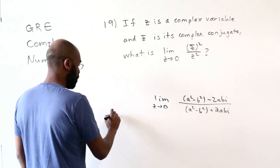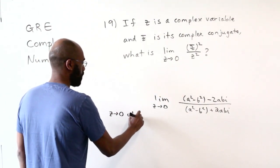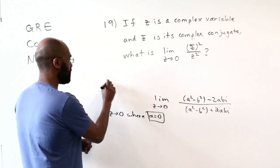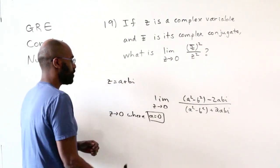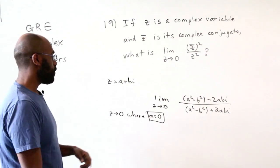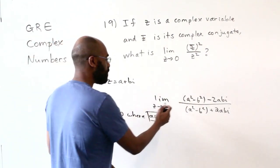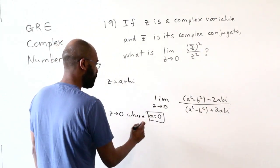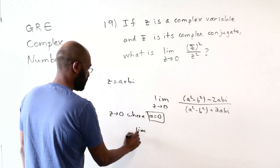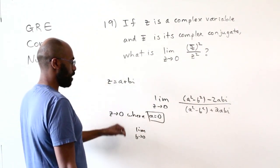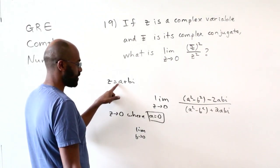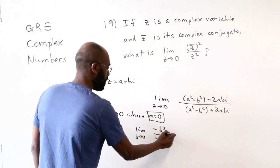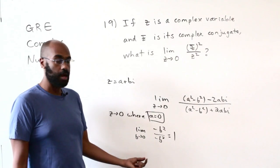If we look at going to 0 where a is 0, remember z is a plus bi here, so what we're saying is going along a line where the real part of z is fixed. Then what happens in this expression is these pieces right here collapse, and you're left with the limit as b is going to 0 of the quantity negative b squared over negative b squared, and that quantity is 1, because the numerator and denominator are identical.